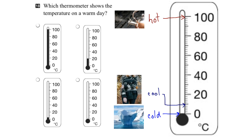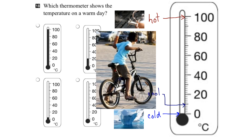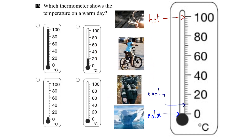Now, what about warm? Well, think about a warm day — that might be when we're out riding our bike, maybe in the spring when we have that first nice day. That would be considered a warm day. Where would warm be on our thermometer? In summer it gets really hot, around 30 degrees Celsius, so warm is probably around 20 degrees Celsius.